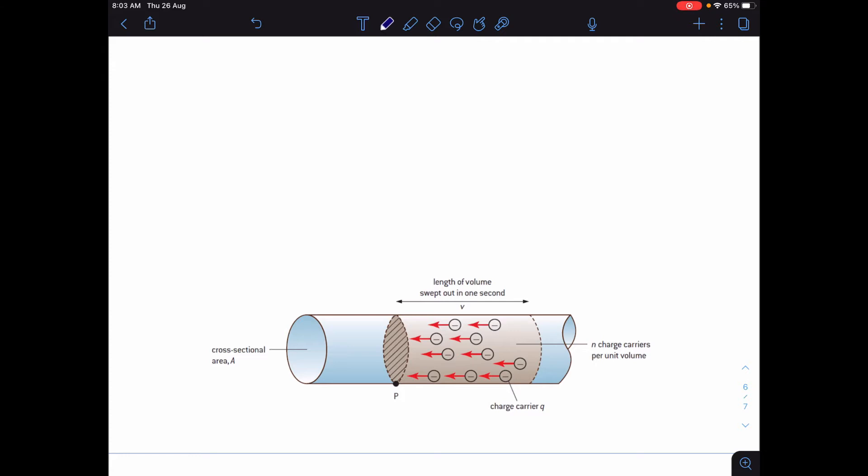You can see a diagram of that there. The wire has a cross-sectional area of A, and there is a point P past which the electrons are travelling.